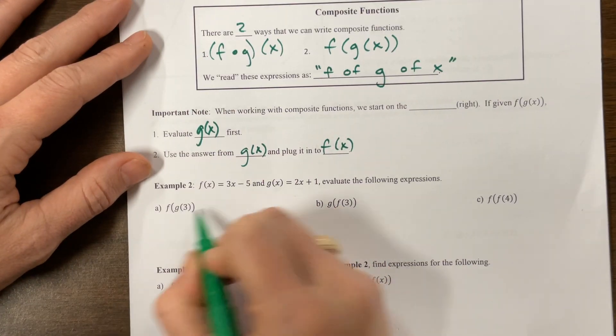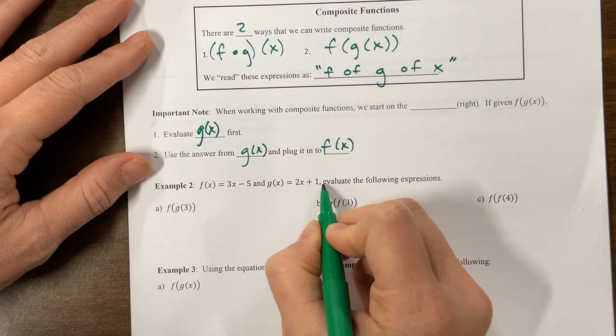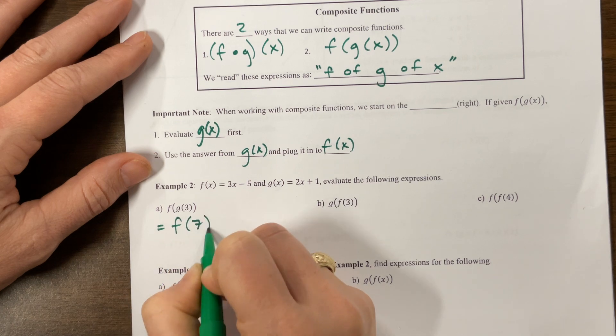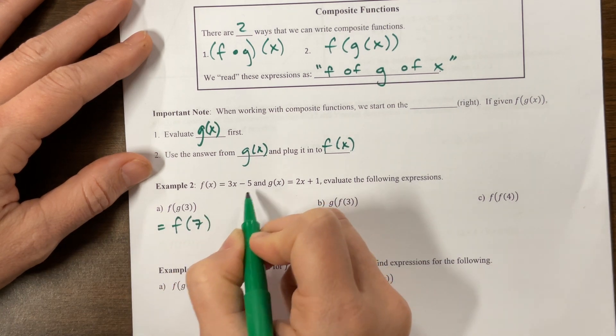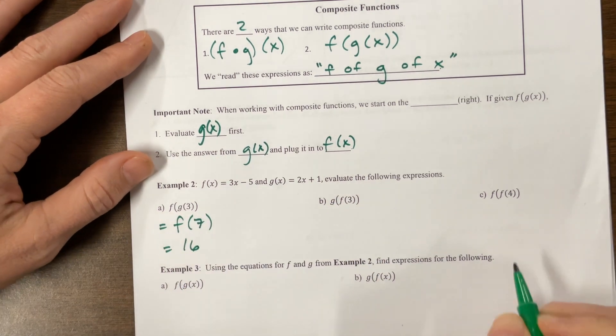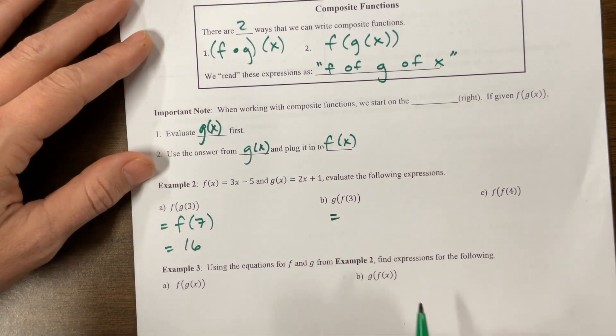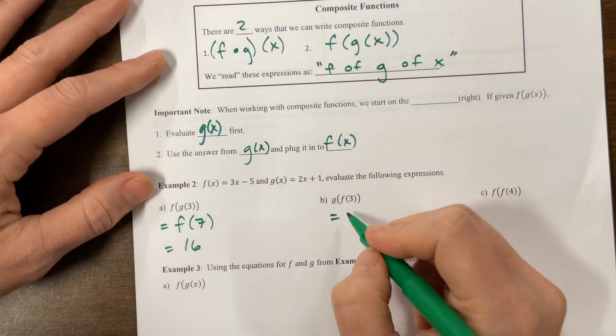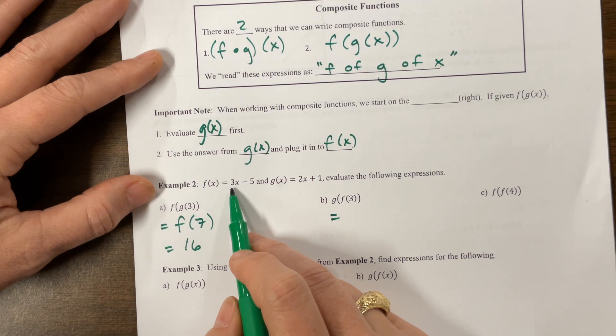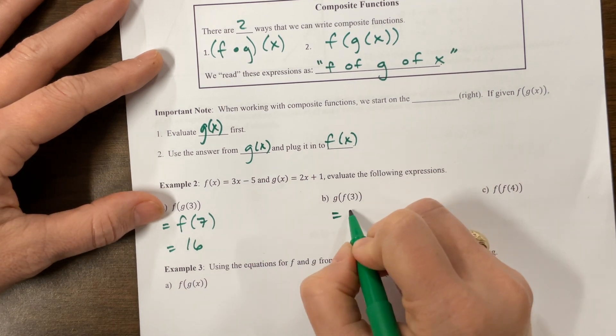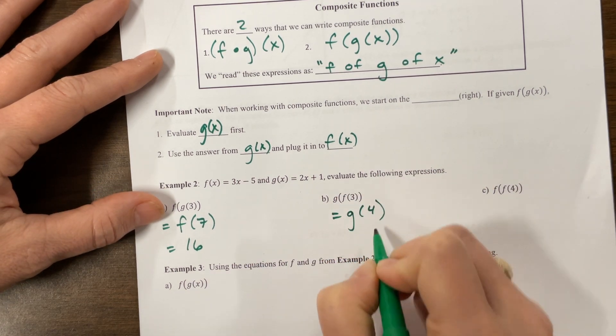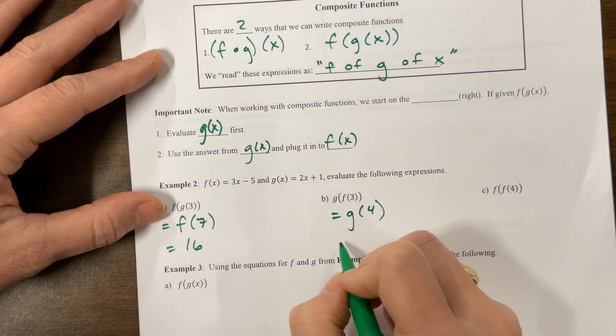So here we have g of 3 would be 6 plus 1 is 7. So this is going to be equal to f of 7. Plug that in here. That's 21 minus 5 is 16. Plug in 3 to this. I have 9 minus 5 is 4. So then this is equal to g of 4. Plug that in. That's 8 plus 1 is 9.